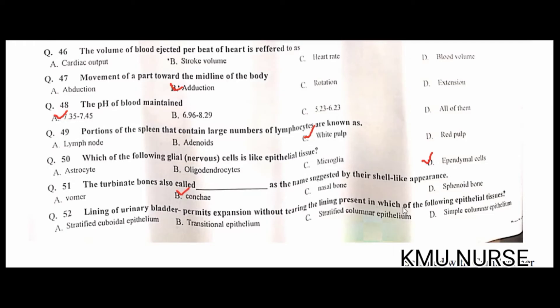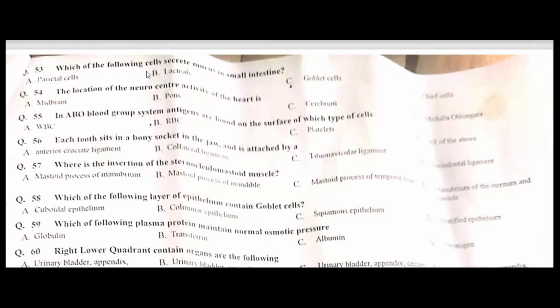The epithelial tissue lining the urinary bladder that allows expansion without tearing is transitional epithelium — B is the correct option. The cells that secrete mucus in the small intestine are goblet cells — C is the correct option.